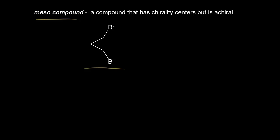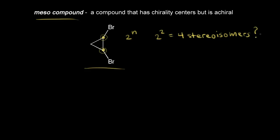We know from earlier videos that this carbon is a chirality center, and so is this one. We would expect two to the n stereoisomers, where n is the number of chirality centers. Since we have two chiral centers here, we would expect two to the second power, or four stereoisomers. This is really just a maximum number, so I'll put a question mark here. So do we get four stereoisomers? Let's draw out the four possibilities.